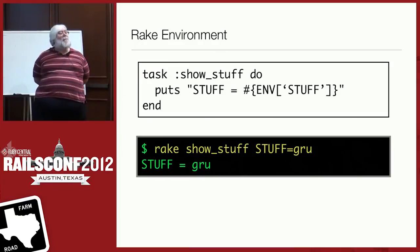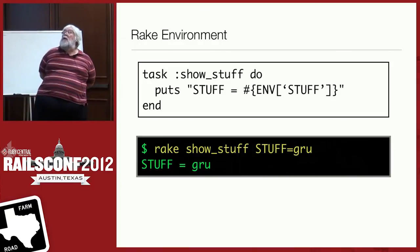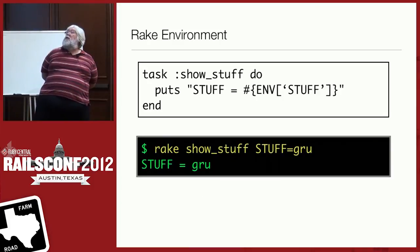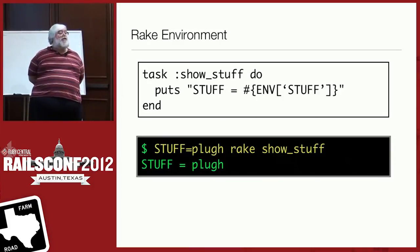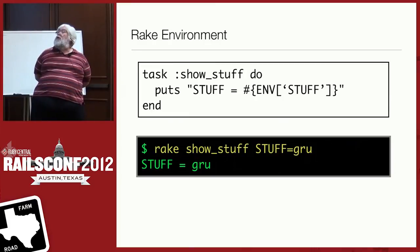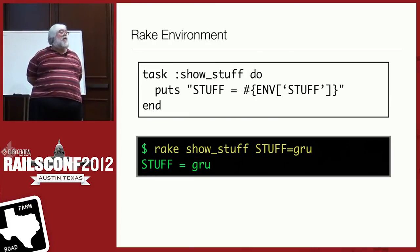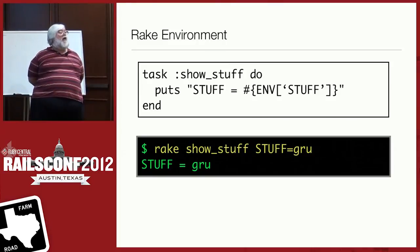There's a difference between setting a variable in front versus appending it. When it's in front, the shell handles it and sets it in the environment. When rake handles it directly, the effect to you as a task writer is the same — and no, it's not persistent outside that execution of rake.